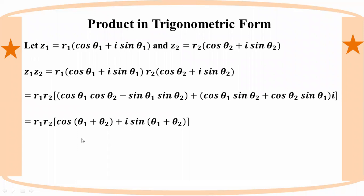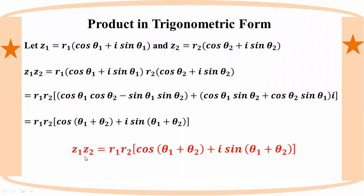So the product z1·z2 in trigonometric form: the complex numbers z1 and z2 give us r1·r2 into cos(θ1 + θ2) plus i·sin(θ1 + θ2). That is the formula for the product of two complex numbers in trigonometric form.